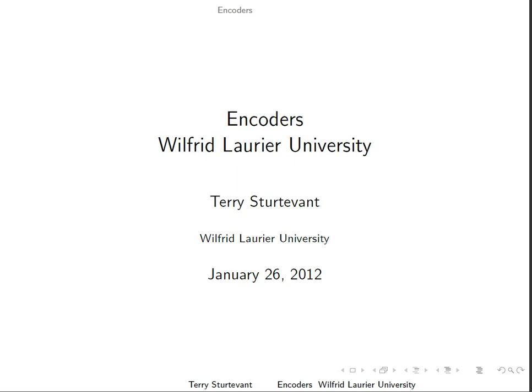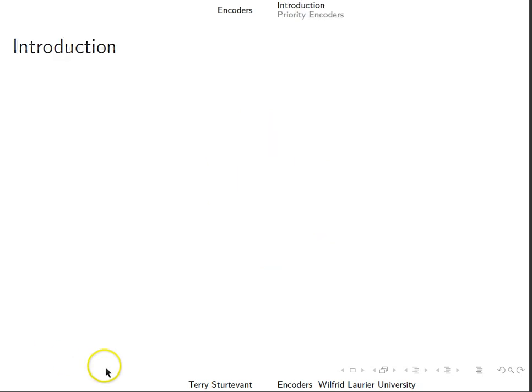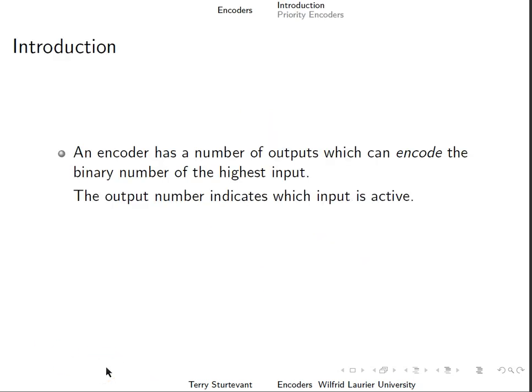This document gives you a brief introduction to encoders. An encoder has a number of outputs which can encode the binary number of the highest input. The output number indicates which input is active.